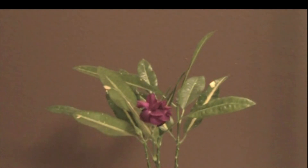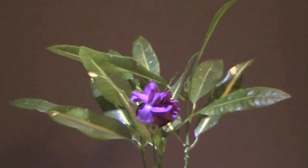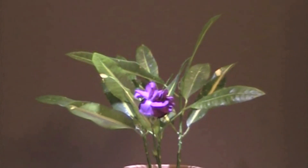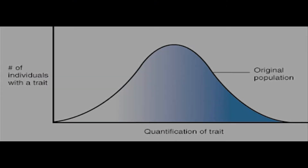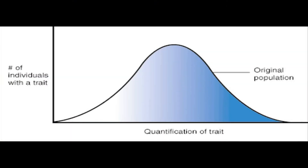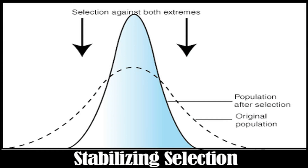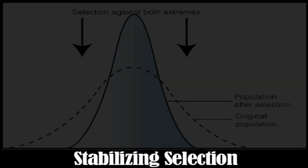However, the medium flower will likely be very successful. It is tall enough to get the right amount of sunlight, yet short enough to avoid wind damage. It will likely continue to reproduce and pass on its genotype to offspring. This will lead to an increase in frequency of the moderate phenotype and genotype, in this case medium height, and a decrease in the frequency of short and tall flowers. This is an example of stabilizing selection.